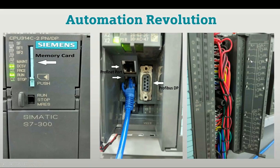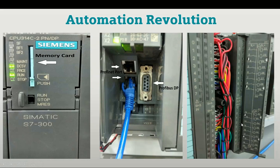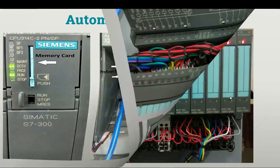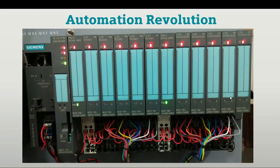Here is the input module diagram. This module has both digital input and output. You can see the left part is for input — this is the common, this is the power supply positive, and all these are inputs. On the right side this is the common output and power supply, and all these are indicating the output relay coil. This is how we can connect input and output with this PLC module.